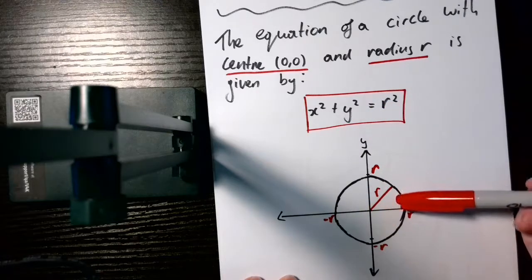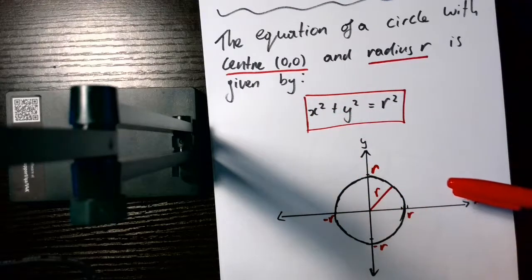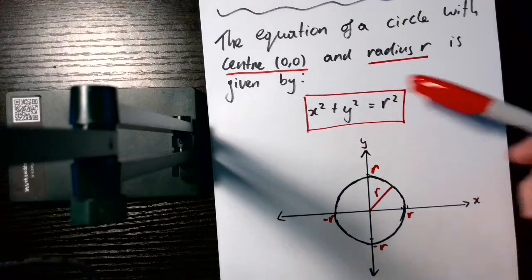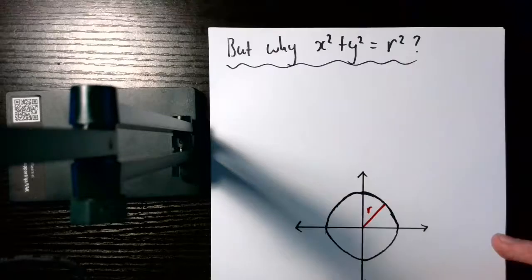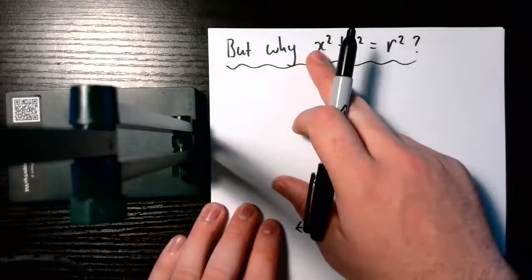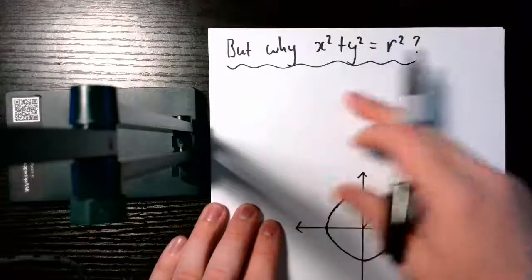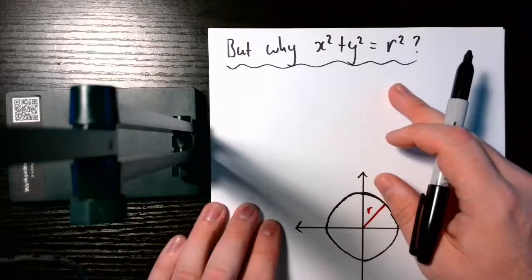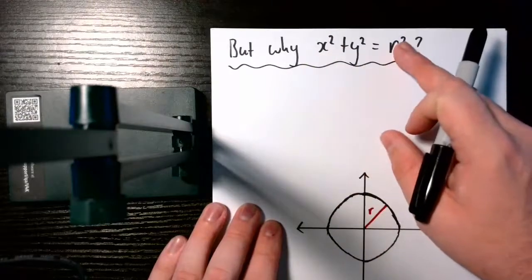But what I want to show you is where this formula actually comes from. And it's something that we actually can discover this formula from something that we've learnt in year 8. So I'll take you through it right now. So, why is the equation of our circle given by this formula? Now this works for any circle. What you will probably most likely see is the equation of a circle being given as an x squared plus y squared equal to some number.